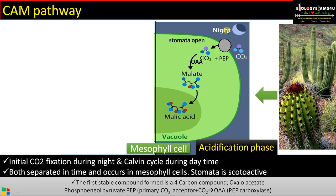Stomata open during night and carbon dioxide enters. It combines with PEP forming oxaloacetic acid in the presence of enzyme PEP carboxylase, just like the C4 pathway. That oxaloacetate is converted to malic acid, which is transported to the vacuole and stored during nighttime. Therefore, the intracellular acidity increases — that is why this phase is called the acidification phase.